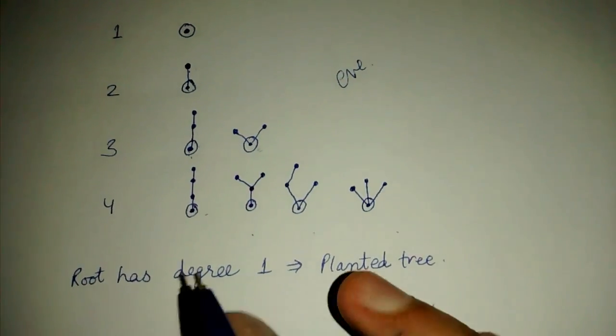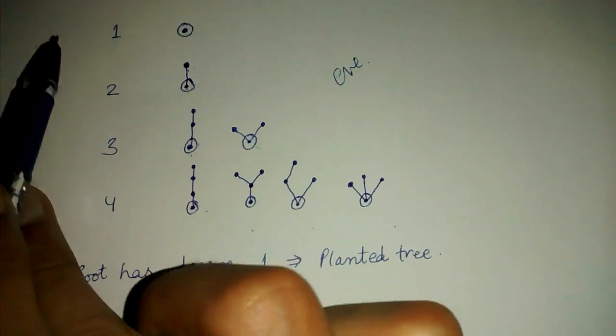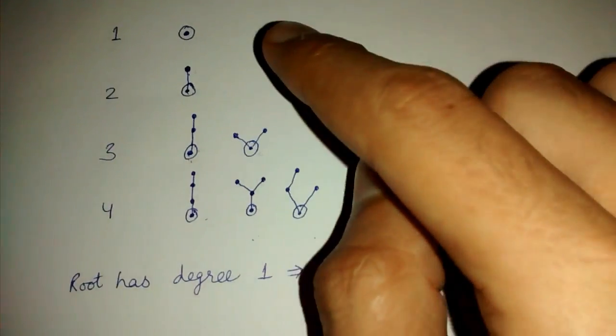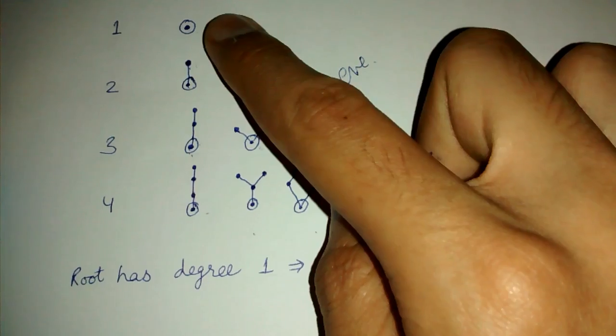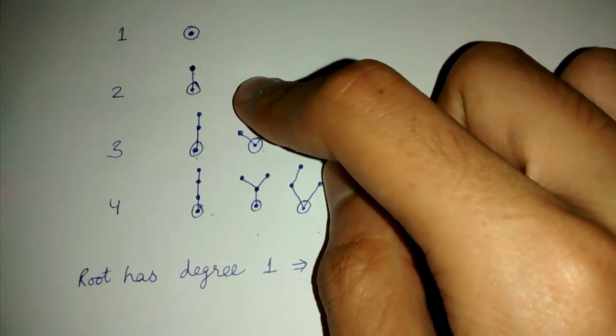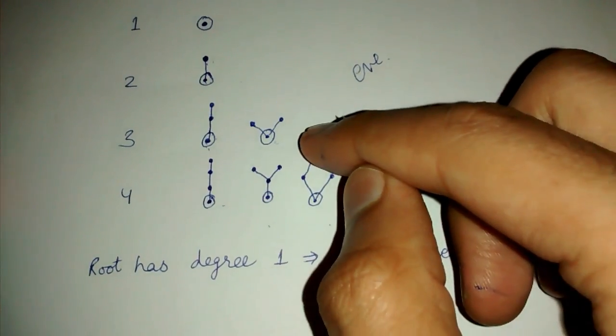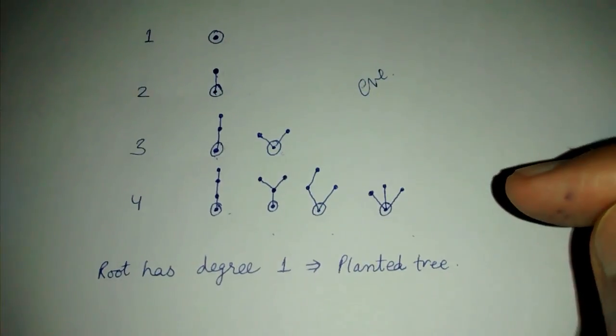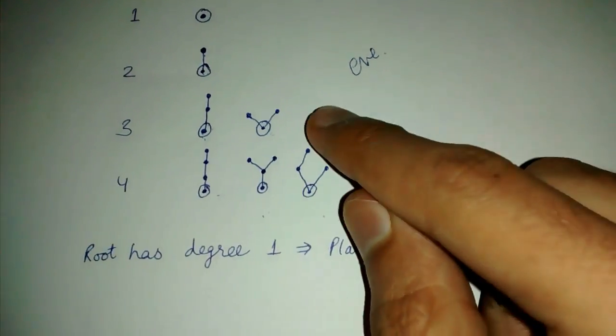And these are the counts of the rooted trees. If there is just one node, then one rooted tree. Two nodes, then two rooted trees. Three identical nodes, then two rooted trees.